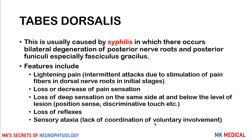Talking about tabes dorsalis: this is usually a consequence of syphilis. It occurs by bilateral degeneration — breakdown of the posterior nerve roots and the posterior fasciculi, especially the fasciculus gracilis. This leads to loss or decrease of pain sensation, loss of deep sensations on the same side and below the lesion, loss of position sensation, loss of tactile localization and discriminative touch, loss of reflexes, and sensory ataxia — lack of coordinated voluntary movements. There is also lightning pain, which consists of intermittent attacks due to stimulation of pain fibers in the dorsal nerve root in the initial stages of the disease.